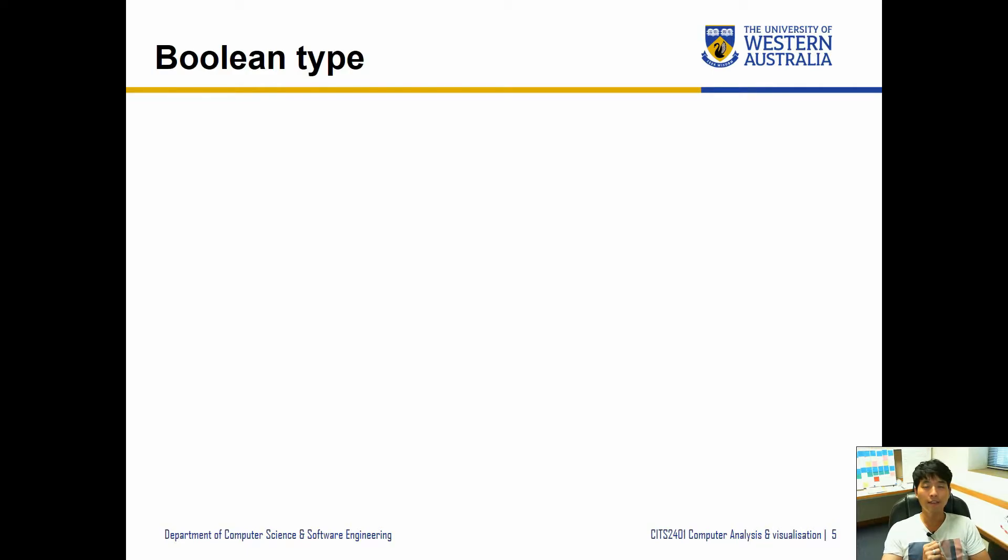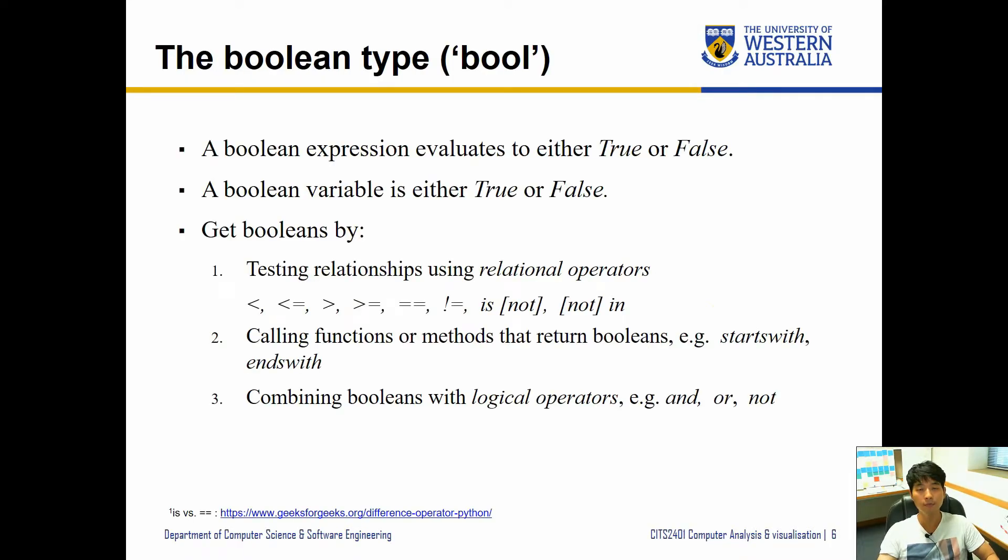Hello and welcome back. In this video we'll be covering booleans in Python. Boolean is one of the types in Python which is represented as just the first four characters, bool. Just like strings, ints, and floats, boolean stores a specific type in Python. However, boolean is much more simple - it's either true or false.